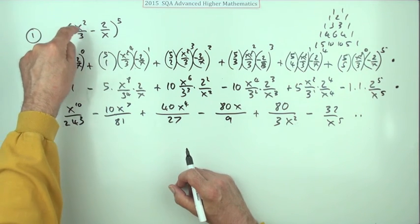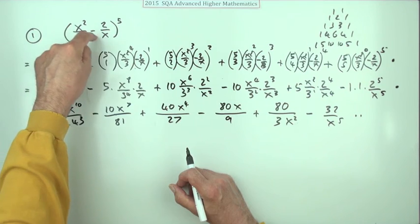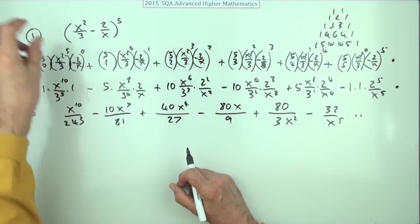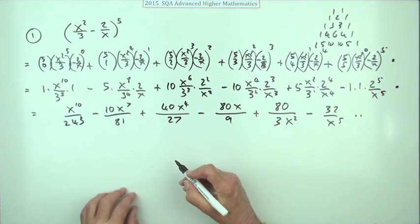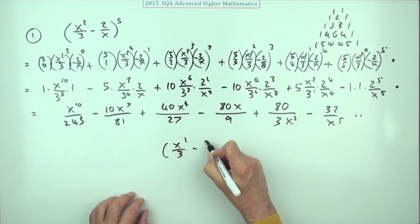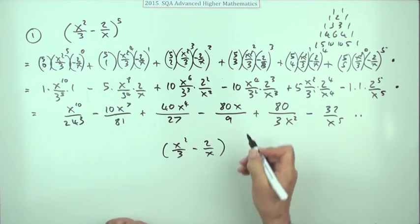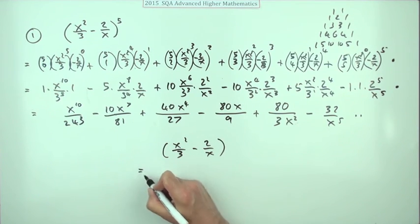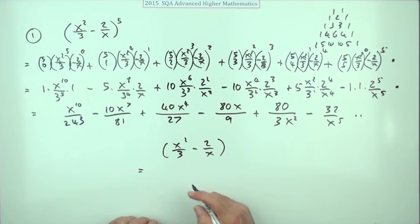Now another thing that you can sometimes do when you've got x's appearing in both terms is to take that out. But it's not actually going to help much in this question because what you could say is this: if you've got x squared over 3 minus 2 over x - I'll leave the power of 5 out of it just now.